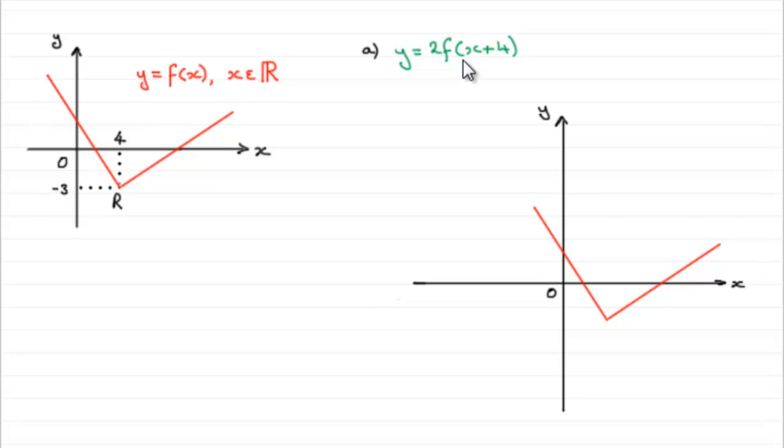Well first of all what we've got to notice is that we've got f of x plus 4, and f of x plus 4 would take the graph of f of x and it would translate it 4 units to the left parallel to the x axis.